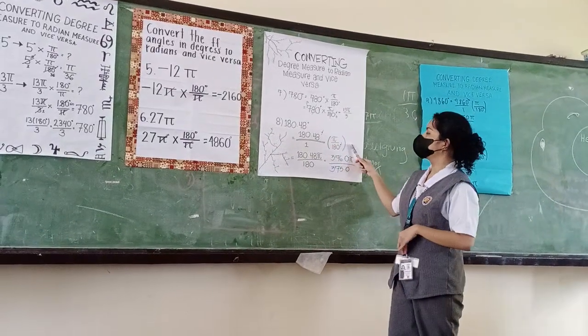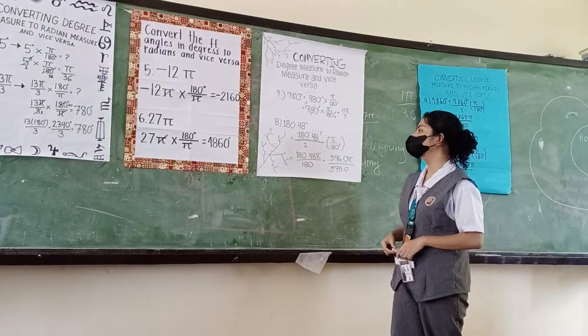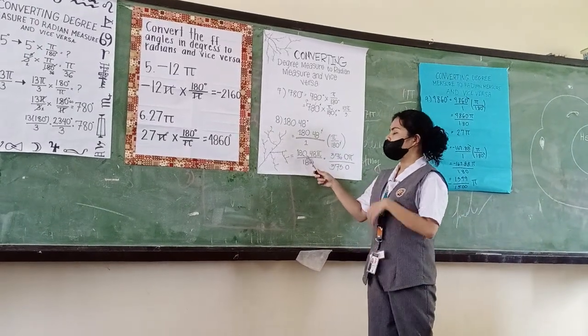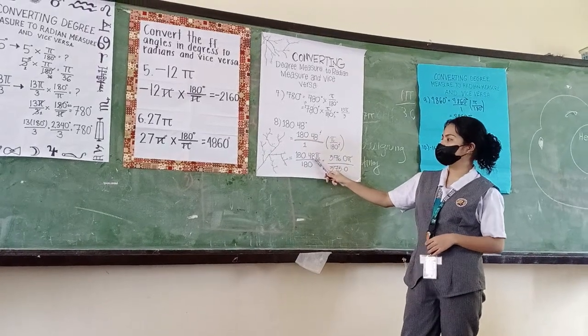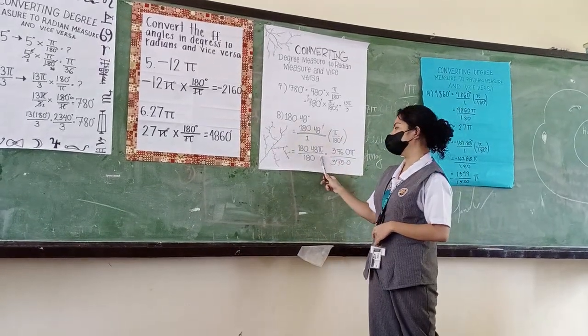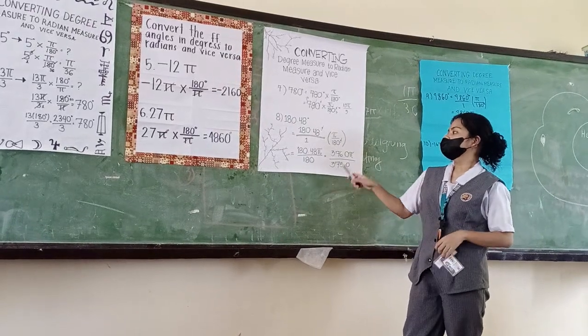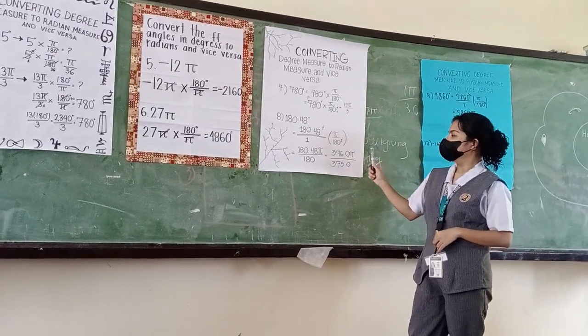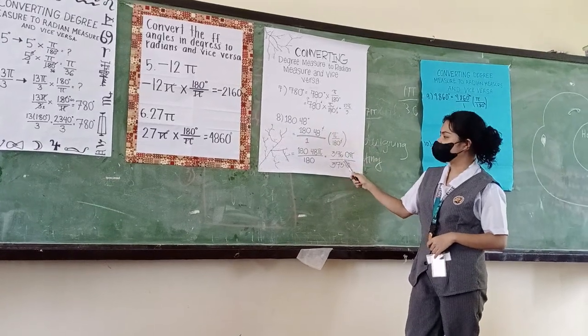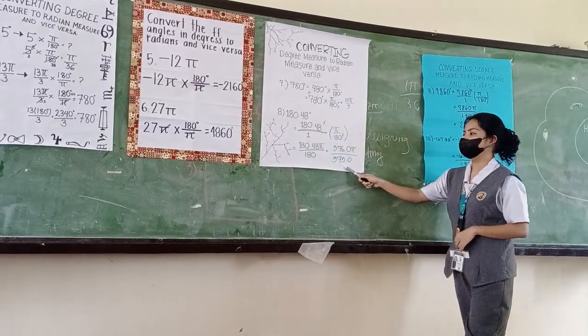Again, we have 180 degrees. 180.48 by 180. So, the answer is 376.05 over 375. I'll see you at the bottom of the screen.